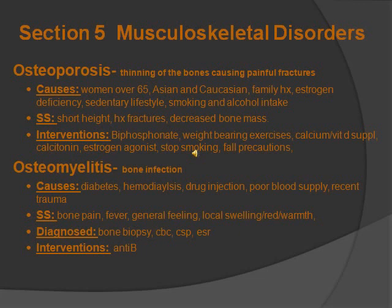Osteomyelitis is a bone infection that can occur at any age. Causes include diabetes, immunodialysis, drug injections, poor blood supply, and recent trauma. Signs and symptoms are bone pain, fever, general feeling of being unwell, local swelling, redness, and warmth. It is diagnosed through bone biopsy, CBC, ESR, etc. The intervention is to give antibiotics because it's a bone infection. To summarize: osteoporosis is breakdown of bone causing fractures — put them on fall precautions; osteomyelitis is a bone infection — give antibiotics.